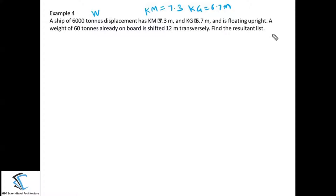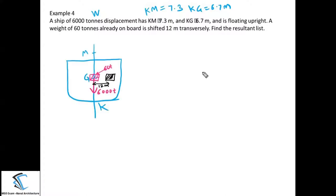Whenever you start solving this type of numerical, please draw the transverse view of the ship and look at the position of the weight — it will make the problem easier to understand. The ship has a displacement of 6000 tons, and the 60-ton cargo is already part of that 6000 tons — no extra cargo is being added. The ship is floating upright initially, so there is no inclination.